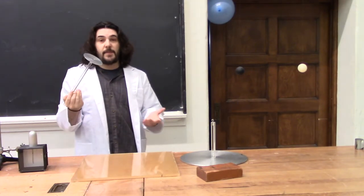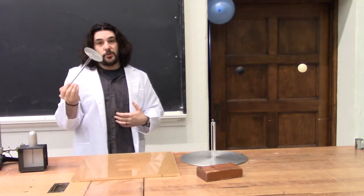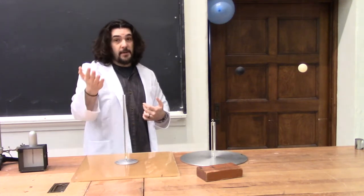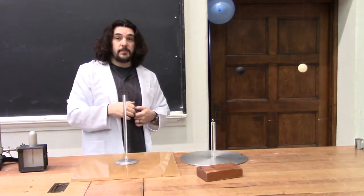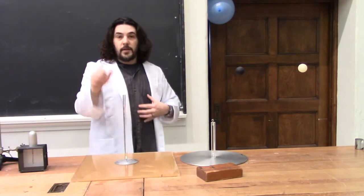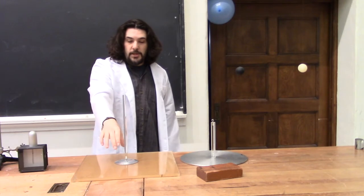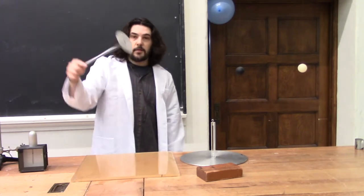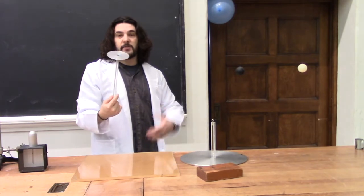So if I pull this plate back, it's still overall neutral. But if I give those electrons somewhere to escape to, say my body, the electric field from the plastic pushes the electrons from the metal onto my body, leaving this plate now positively charged.